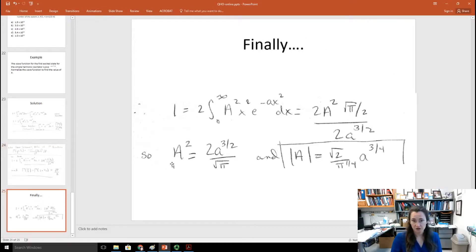and I end up with 1 is equal to 2 big A squared times the root pi over 2, over 2a to the 3 halves power. Simplifying that, I get A squared is equal to 2a to the 3 halves divided by the square root of pi, or solving, the absolute value of A is equal to the root of 2 over pi to the 1 fourth a to the 3 fourth power. So, I've solved for what my undetermined constant is in that first excited state for the quantum harmonic oscillator.